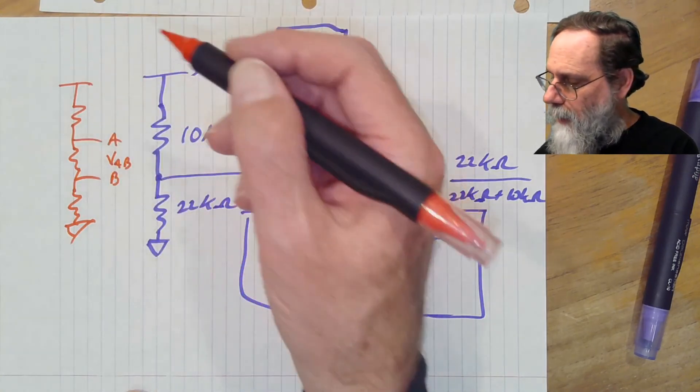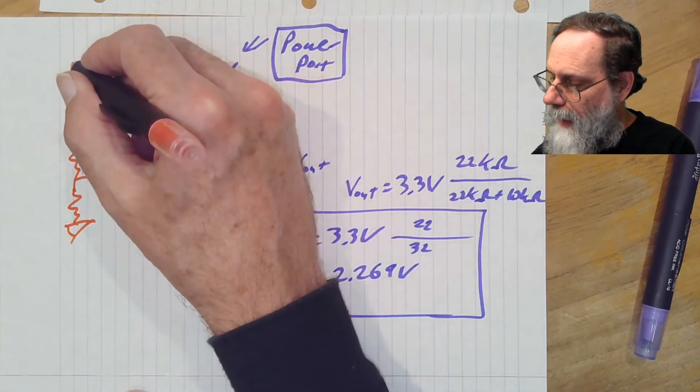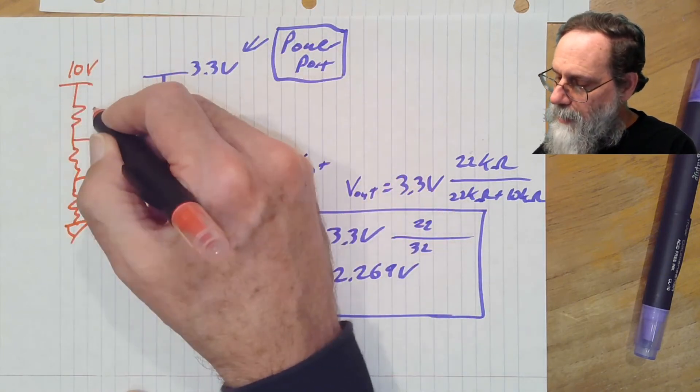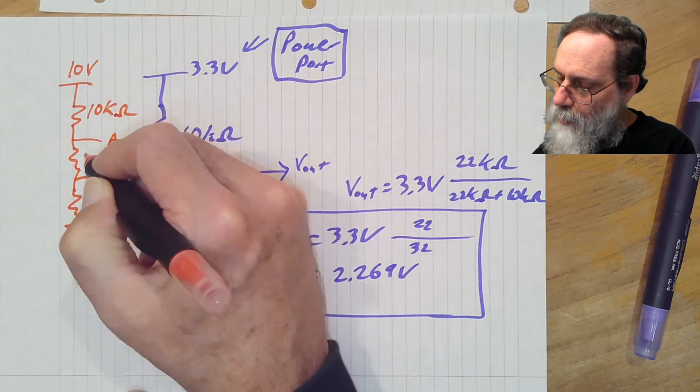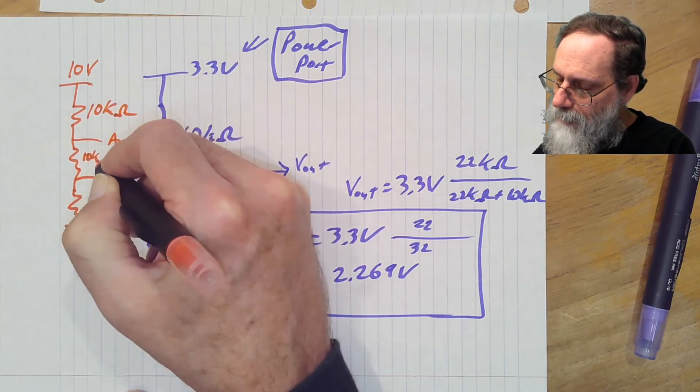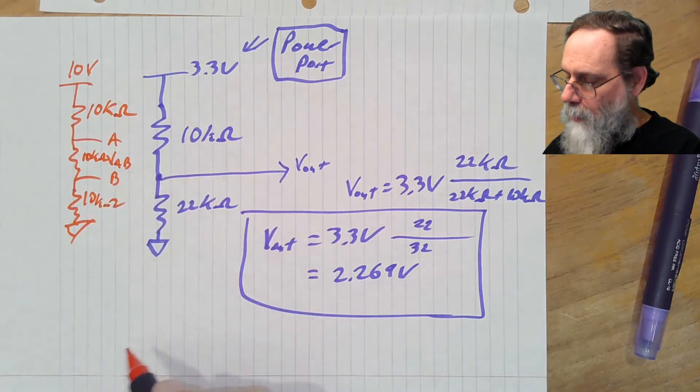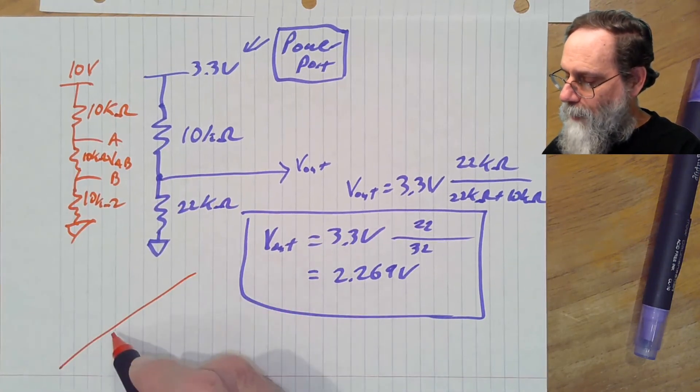Well, if I look at this, let's say this is 10 volts. This is 10 kilo ohms, 10 kilo ohms, and 10 kilo ohms.